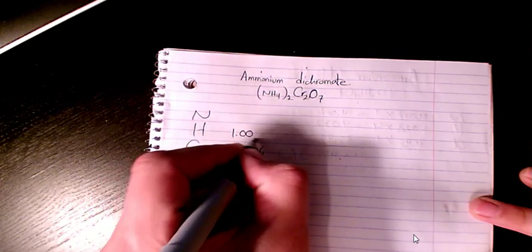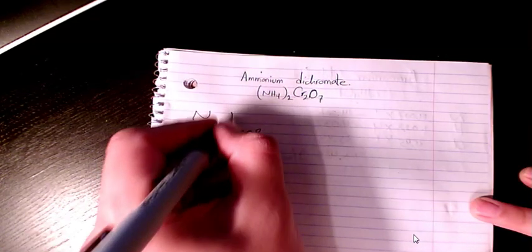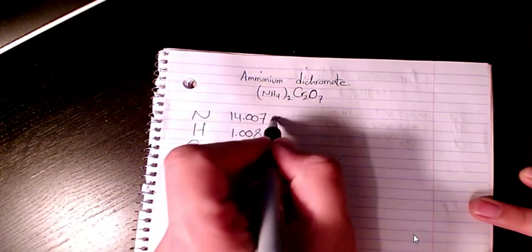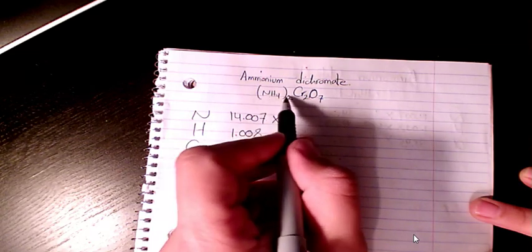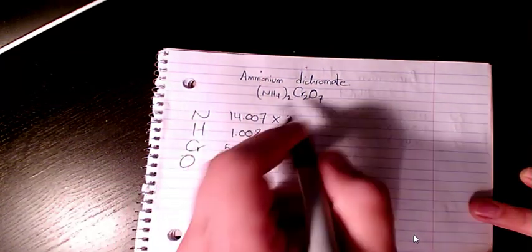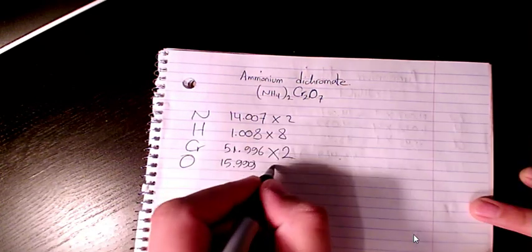So we have two nitrogen, you have eight - two times four - eight atoms of hydrogen, two chromium, and seven oxygen.